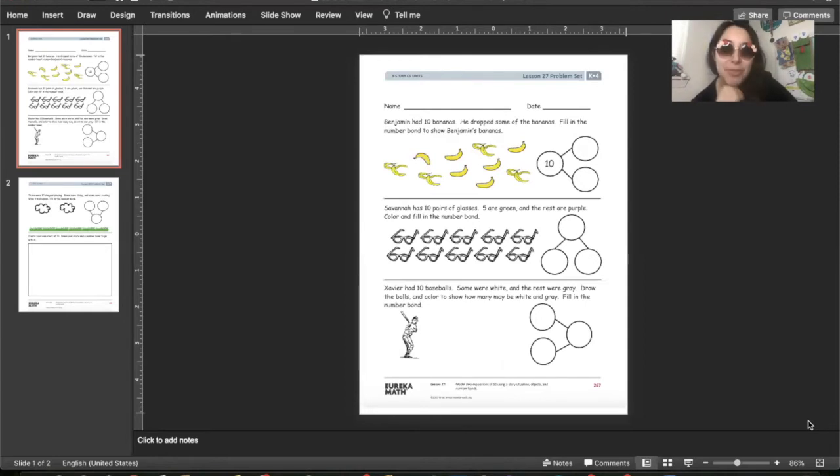So, Benjamin had 10 bananas. He dropped some of the bananas. Fill in the number bond to show Benjamin's bananas. I'm going bananas if you don't turn in the parent survey. So, some of the bananas are on the floor, and some are whole. Those are your parts.